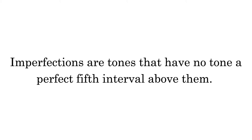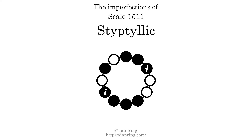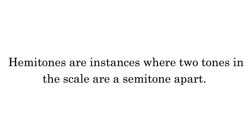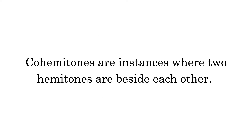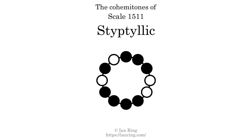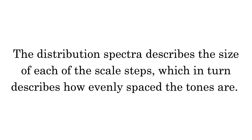Imperfections are tones that have no tone a perfect 5th interval above them. This scale has 2 imperfections. Hammertones are instances where 2 tones in the scale are a semitone apart. This scale has 5 hammertones. Co-hammertones are instances where 2 hammertones are beside each other. This scale has 3 co-hammertones.